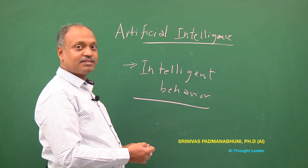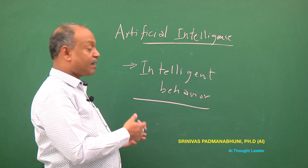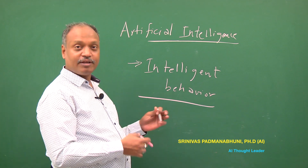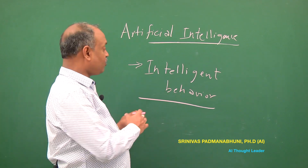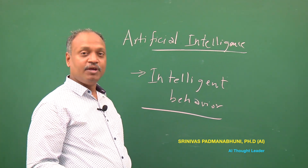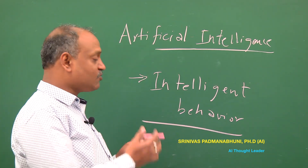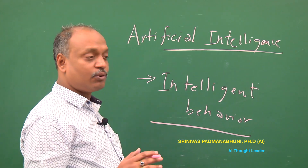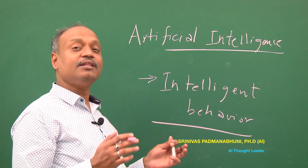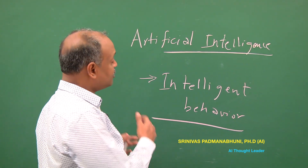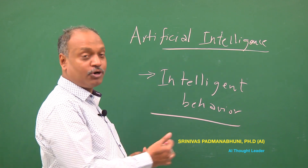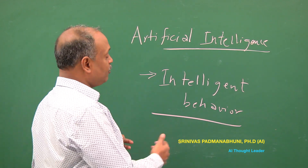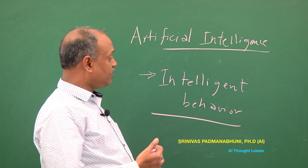When you have generic rules, you can check if in a specific instance the rule can be applied, or it can be in the form of finding root causes from certain symptoms you're observing. While reasoning is one end, on the other end it's about understanding different external stimuli and being able to respond to that kind of input.